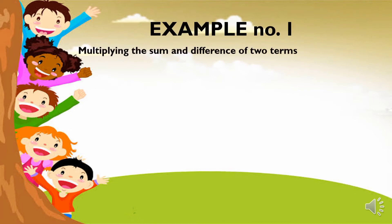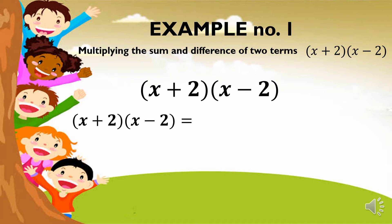We have an example about multiplying the sum and difference of two terms. We have here x plus 2 times x minus 2. x times x is equal to x squared. x times negative 2 is equal to negative 2x. 2 times x is equal to 2x. And 2 times negative 2 is equal to negative 4. Canceling negative 2x plus 2x, we will have an answer of x squared minus 4.